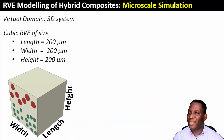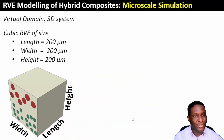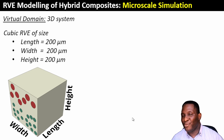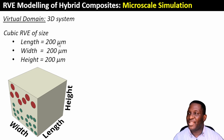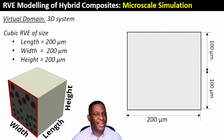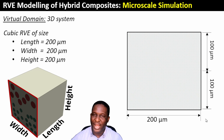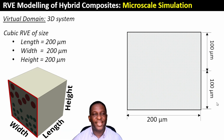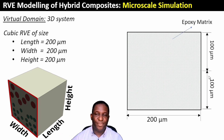To get started, here is the theory and model setup. This is a virtual domain representation of the system — a micro-scale representation of the hybrid composite. The dimensions are length, width, and height of 200 microns. Looking at the planar view, the width is 200 microns, and the height consists of two layers, each 100 microns thick, buffered with an epoxy matrix.